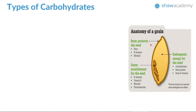The bran is the part usually removed during refinement. The germ is also removed during refinement. The germ is a good source of B vitamins, vitamin E, minerals, and phytochemicals. This is why it is advised to eat whole grain most of the time.